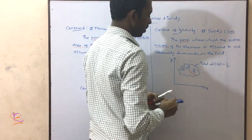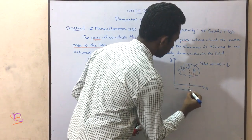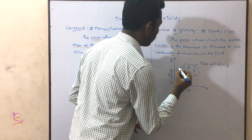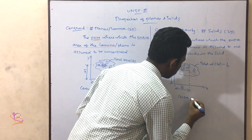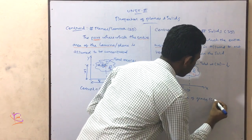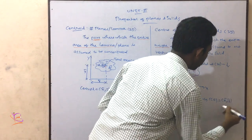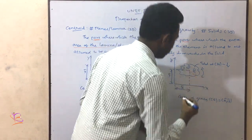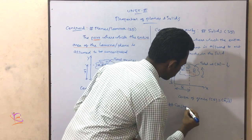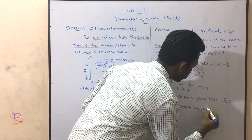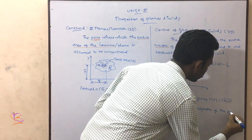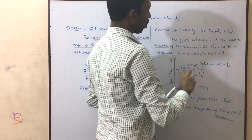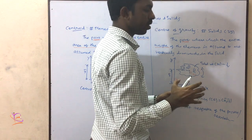The centre of gravity is denoted by CG. Here the distance from the axis is taken as x-bar and y-bar. So CG equals (x̄, ȳ). The centre of gravity point is constant irrespective of the position or orientation — if you are rotating this element, the centre of gravity will remain constant.